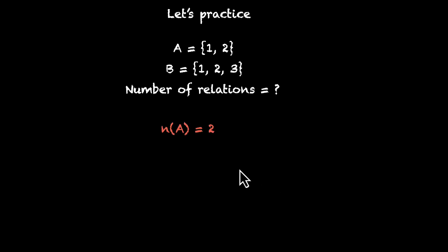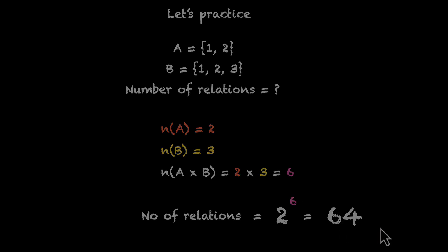Let's wrap this up by plugging this formula in a different problem. We have the set A with two elements, set B with three. Find the total number of relations. N of A is 2, N of B is 3, N of A times B, that's going to be 2 times 3, that's 6. So total number of relations become 2 to the power 6, that's going to be 64. And that's it.